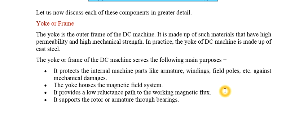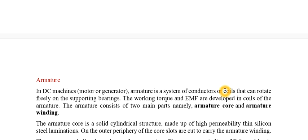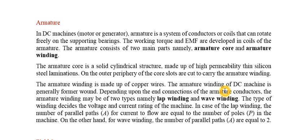The armature is a system of conductors or coils that can rotate freely on supporting bearings. Working torque as well as EMF are developed in the armature coils. It consists of an armature core and armature winding. The core is a solid cylindrical structure made up of high-permeability thin silicon steel laminations.